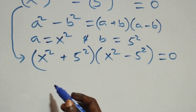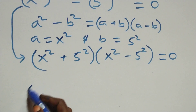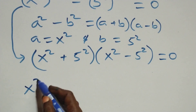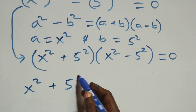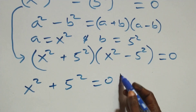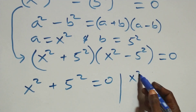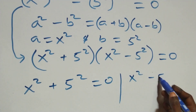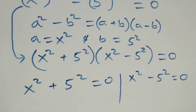At this point, we have 2 possible cases: x squared plus 5 squared equals to 0, or we have x squared minus 5 squared equals to 0.